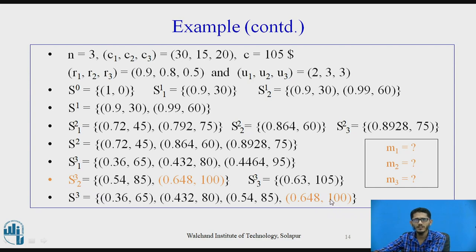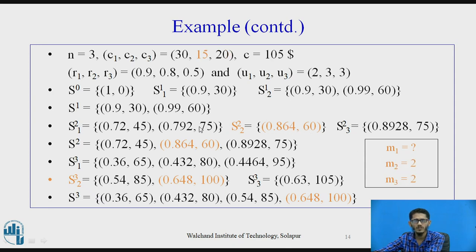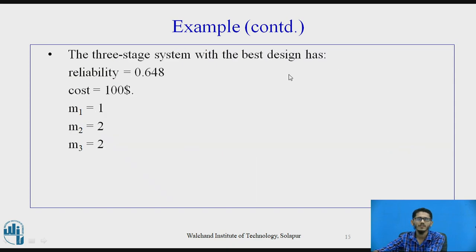Finally, taking S3 by merging all tuples, the maximum reliability is 0.648 at cost 100 dollars, generated from S3,2 — meaning two copies of device d3. This tuple came from S2 tuple (0.864, 60) which was from S2,2, so m2 equals 2 — two copies of device d2. And (0.864, 60) was generated from (0.9, 30) which came from S1,1, indicating one copy of device d1, so m1 equals 1. Therefore m1, m2, m3 equal 1, 2, and 2. The three-stage system design has reliability 0.648 and cost 100 dollars.